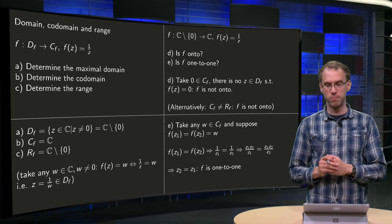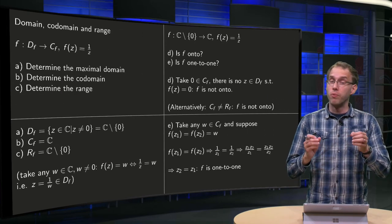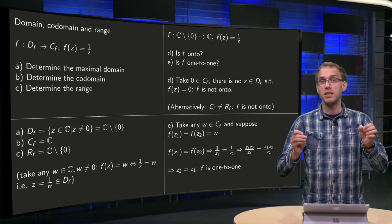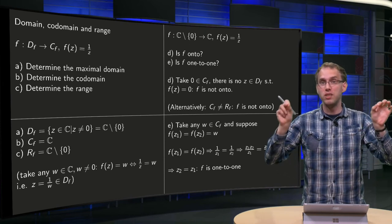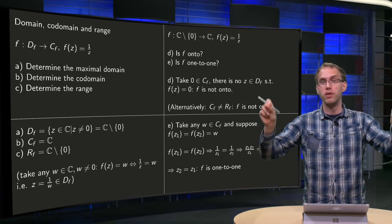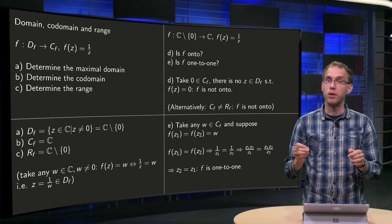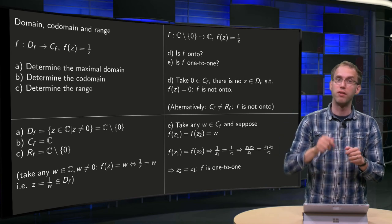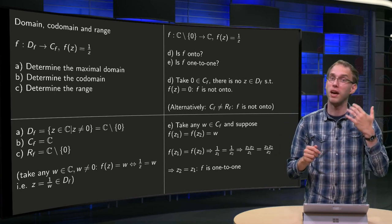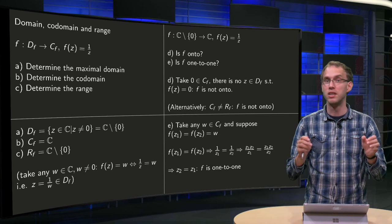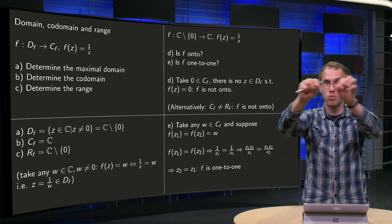Then, one-to-one. What does one-to-one mean? It means that if you have two different values, z1 and z2, which go to the same value w, then your function is not one-to-one. One-to-one means that any value w in the codomain can be reached by at most one z in the domain, so it is not possible that two different z's go to the same value.